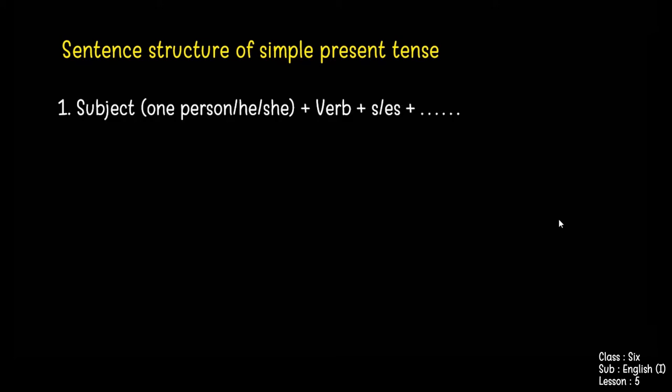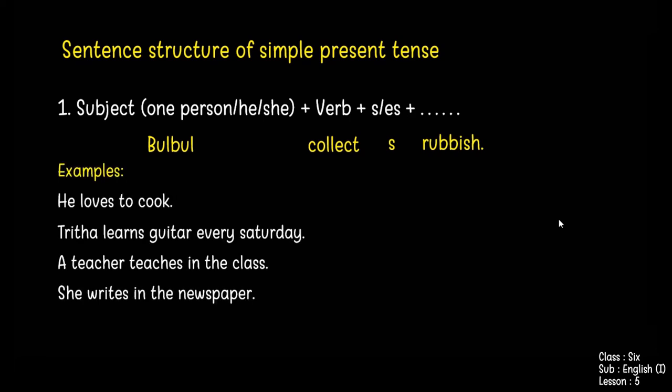So the rule is simple. The structure of simple present tense is: subject (one person / he / she) + verb with S or ES + extension. For example: 'Bulbul collects rubbish.' More examples: 'He loves to cook.' 'Tritha learns guitar every Saturday.' 'A teacher teaches in the class.' 'She writes in the newspaper.'